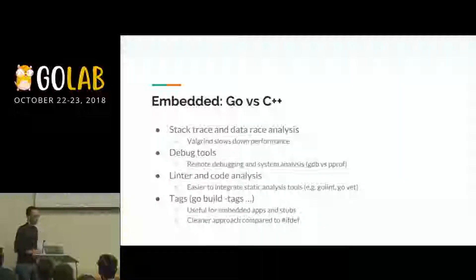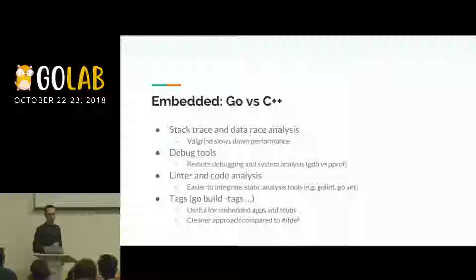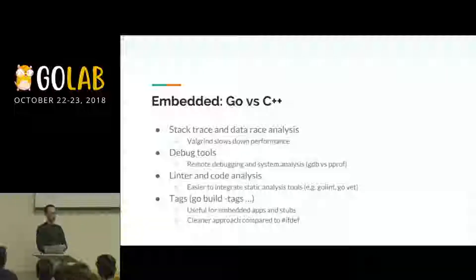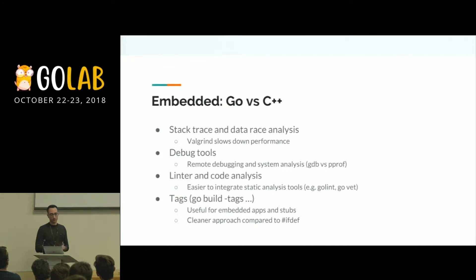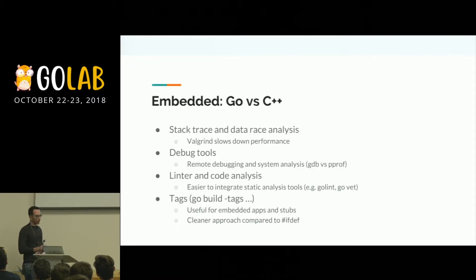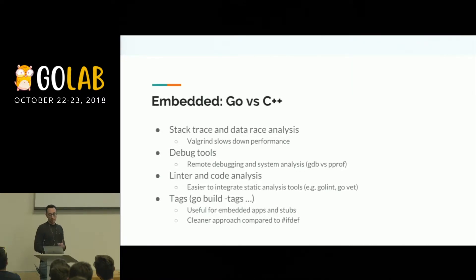I've worked on embedded projects with C++ many times, and there are some things I found much easier with Go. For example, stack traces: in C++ it is very difficult to get a stack trace because you have to use a toolchain from a BSP for a specific board. Moreover, when using Valgrind it slows down performance so much that it's difficult to use on real hardware. With Go we have a lot of static analysis tools we can integrate with our development environment, and build tags are clearer than ifdefs in C++.